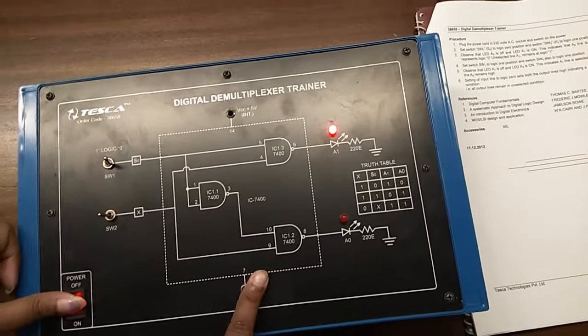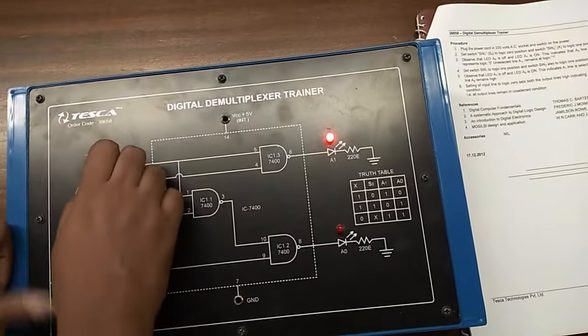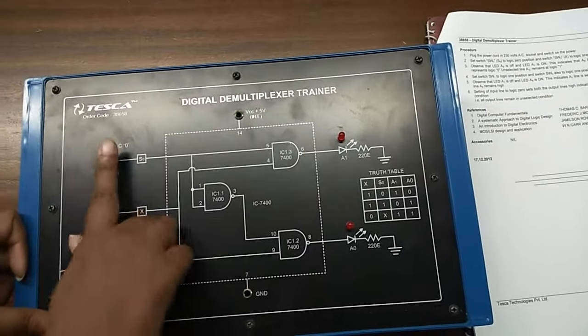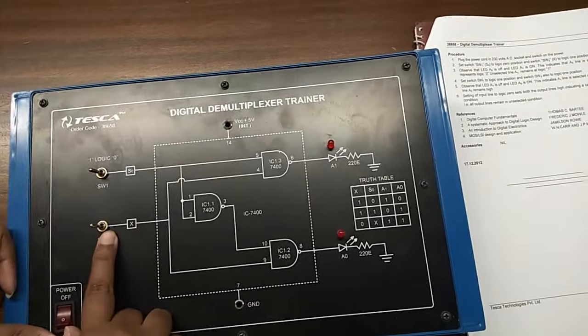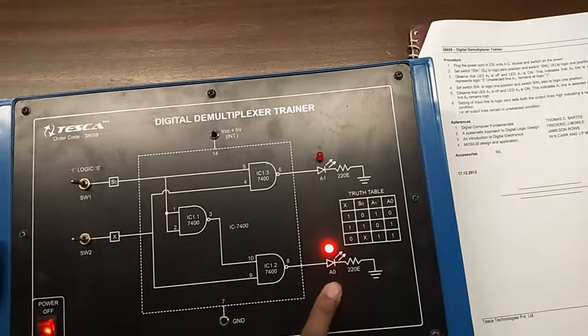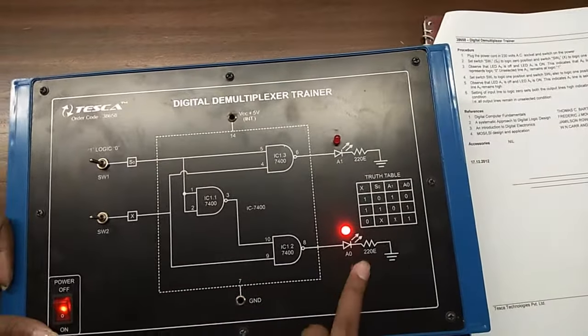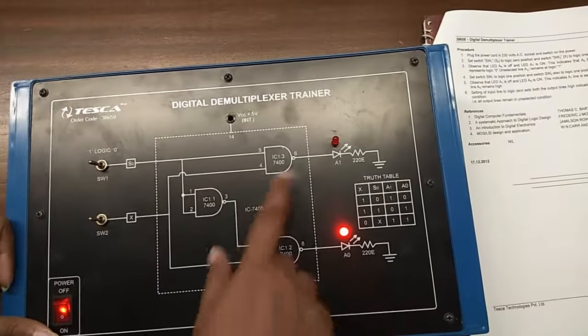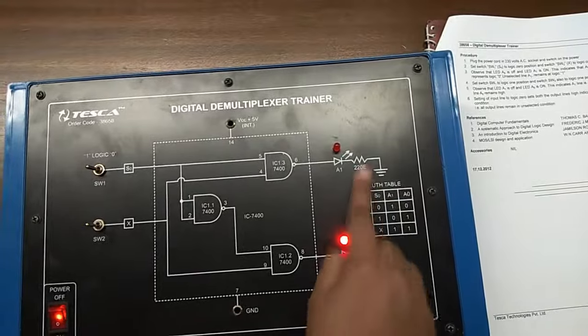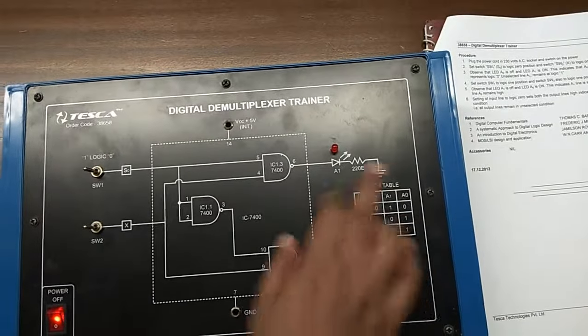Set switch SW1 to logic 1 position and switch SW2 to also logic 1 position. We can see that A1 is off and A0 is on. This means that the A1 line is selected and represents logic 0.